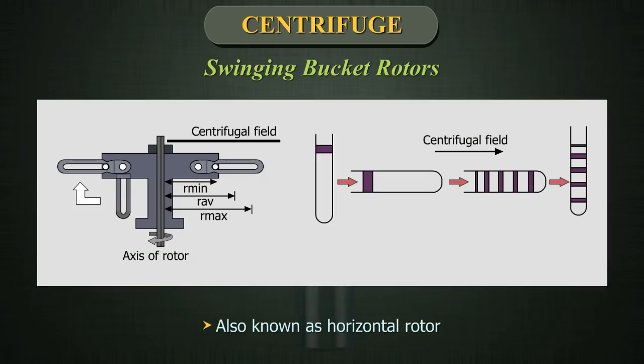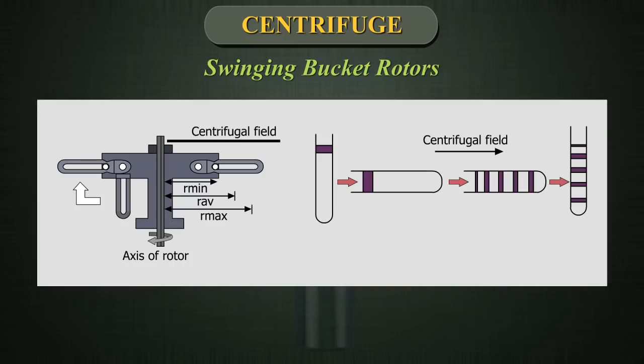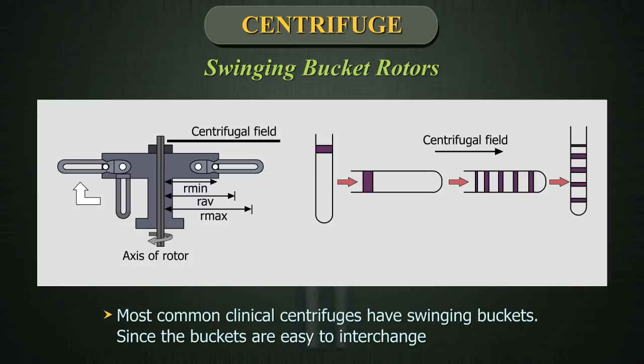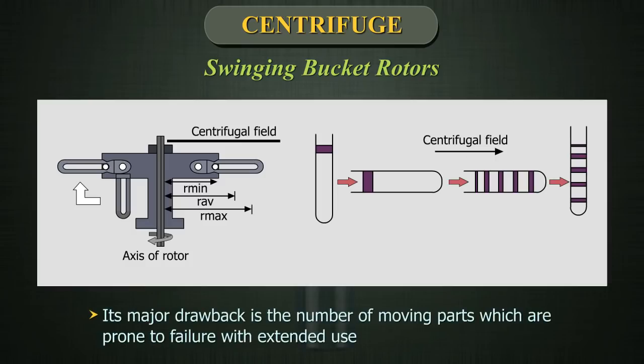In swinging bucket rotors, also known as horizontal rotors, the materials must travel down the entire length of the centrifuge tube and always through the media within the tube. Most common clinical centrifuges have a swinging bucket. Since the buckets are easy to interchange, this type of rotor is extremely versatile. Its major drawback is the number of moving parts, which are prone to failure with extended use.